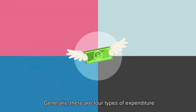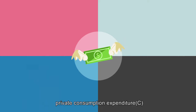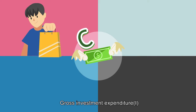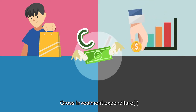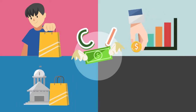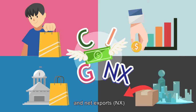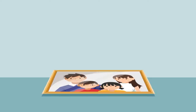Generally, there are four types of expenditure: private consumption expenditure (C), gross investment expenditure (I), government consumption expenditure (G), and net exports (NX).